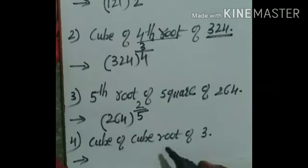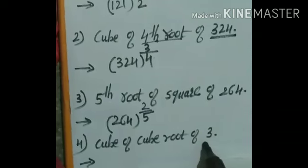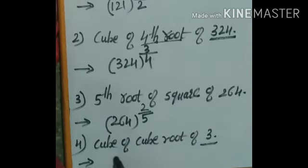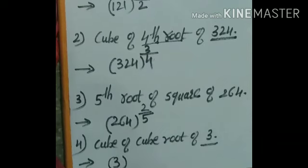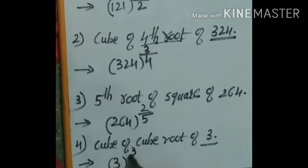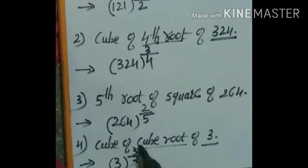Now the last question: cube of the cube root of 3. Here 3 is the base number. Cube means it is the numerator, and cube root means it is the denominator. So we write: 3 raised to 3 upon 3. This exercise is now completed.